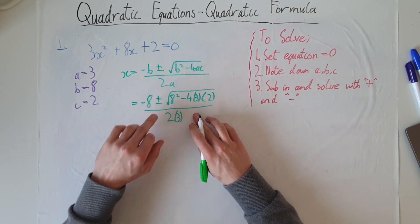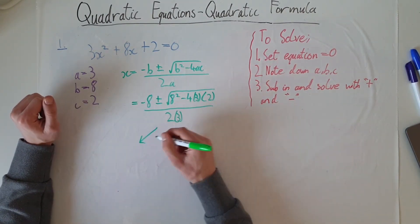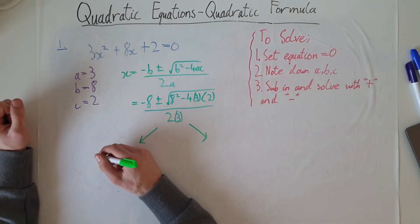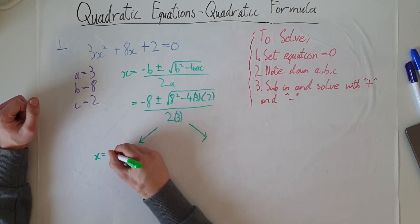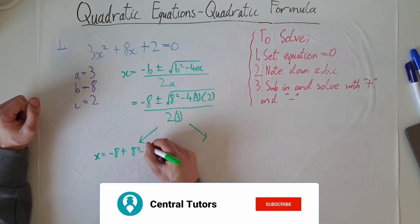So how we do this is we have two separate equations that we solve for two roots. First of all, we have x equals negative 8 plus the square root of 8 squared minus 4 times 3 times 2, all over 2 times 3.